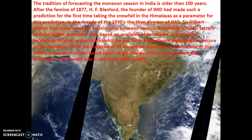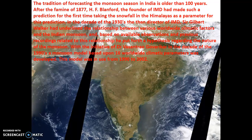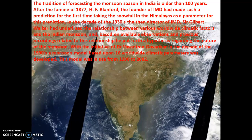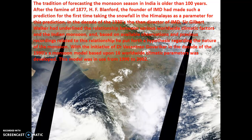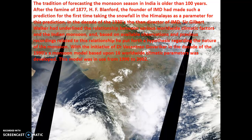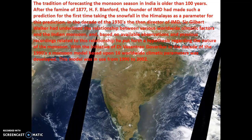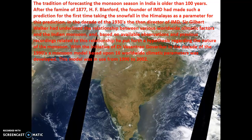The tradition of forecasting the monsoon season in India is older than 100 years. After May 1877, H.F. Blanford, the founder of IMD, made such a prediction for the first time, taking the snowfall in the Himalayas as a parameter — that means criteria — for this prediction. In the decade of the 1930s, the director of IMD Sir Gilbert Walker underlined the relationship between various worldwide climatic factors and the Indian monsoon, and based on available observations and previous recordings, he put forth a hypothesis regarding the nature of the monsoon.